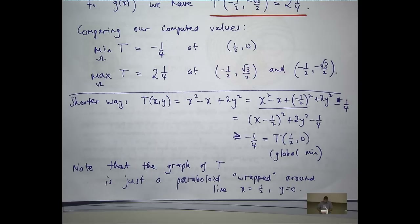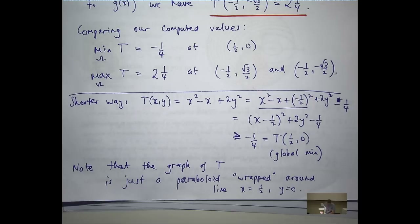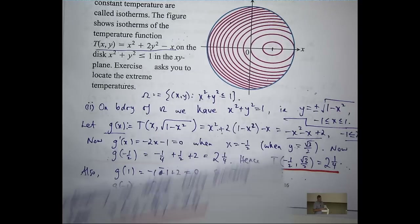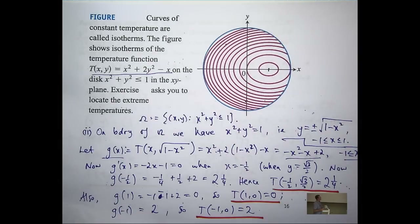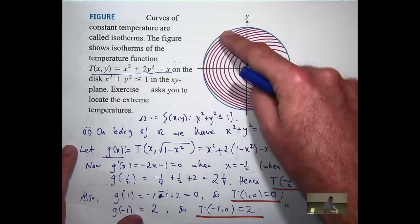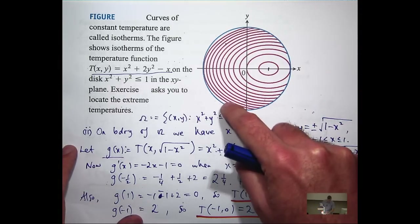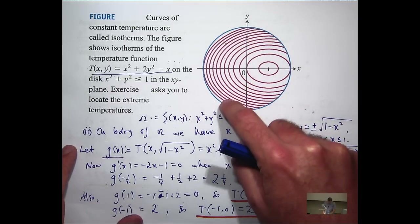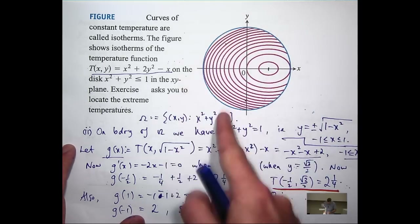For boundary conditions, do you have to do this for the shorter method? That's a good question. For the boundary conditions on this particular example, you could have used symmetry. If you found this point, you could say, 'well, because of symmetry, the other max-min type point has to lie on this vertical line.' I would be happy with that.